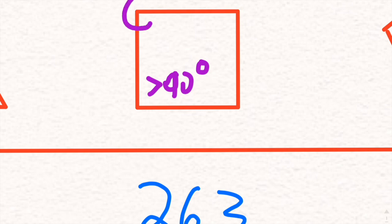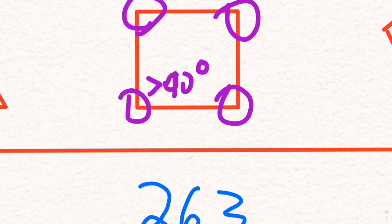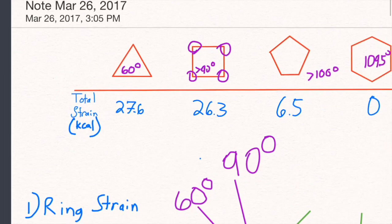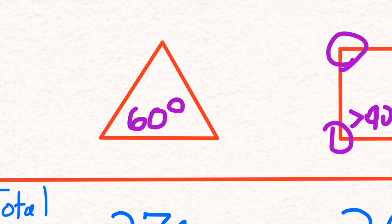If we went over the individual ring strain of each, these would be by far worse than the cyclohexane. So this has greater ring strain per individual angle, but of course not as terrible as the cyclopropane here.